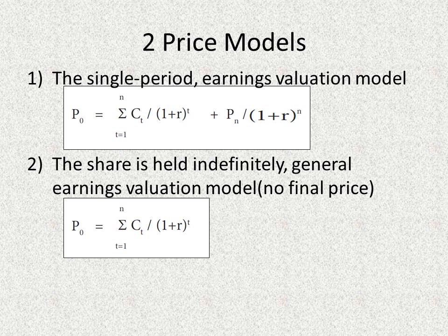We have two price models for this case. The first model is the single period — you will sell the stock later. In this case, price value is determined by two parts: the cash flow discounted by the required return rate, and the final sale price discounted by the required return rate. The second price model is the case that you will hold the stock forever and never sell it. In this case, the price value is based only on the future cash flow divided by the required return rate.